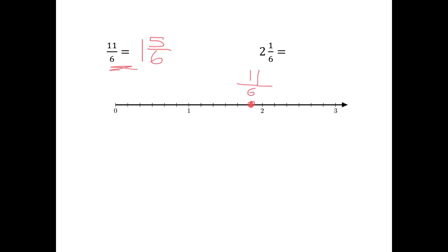What about two and one-sixths? To get to two and one-sixths, I've got to go two and one more sixth. So this is the point two and one-sixths. If I want to turn that into an improper fraction, I have to say two times six, which is twelve, plus one, which is thirteen. So I get 13 over 6. And you should be able to see that — if you count here, you've got six, twelve, thirteen. You've got thirteen-sixths.